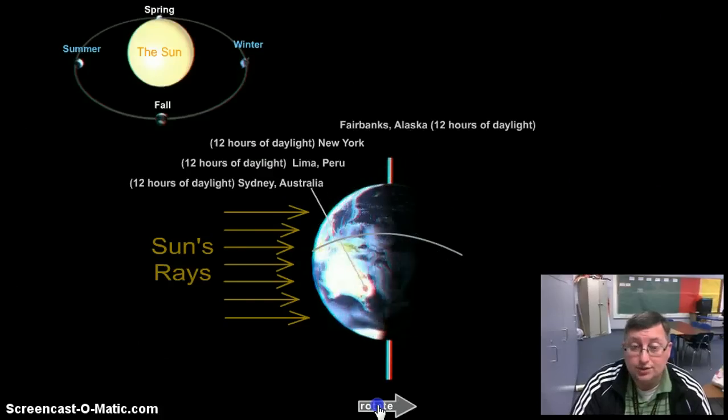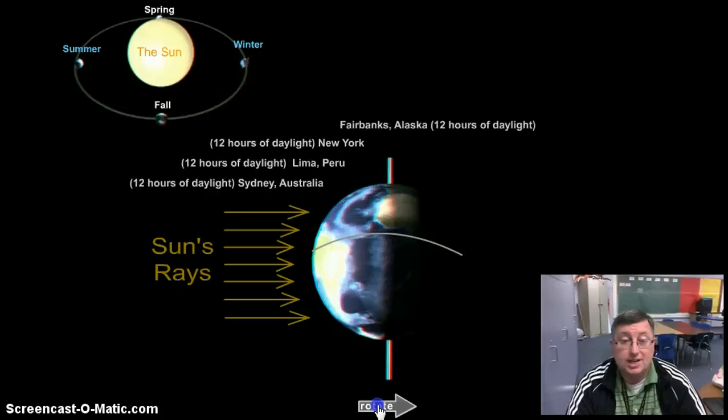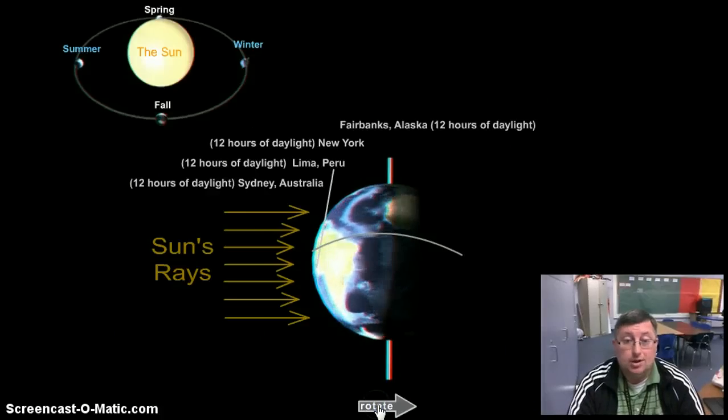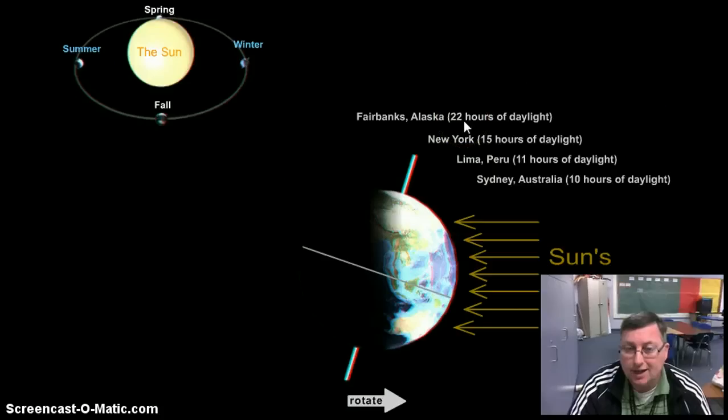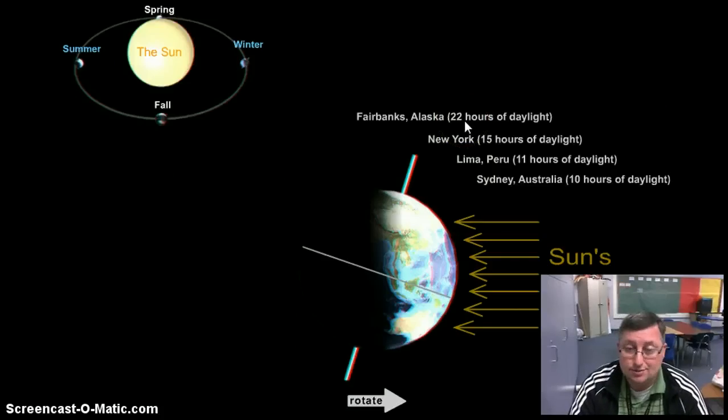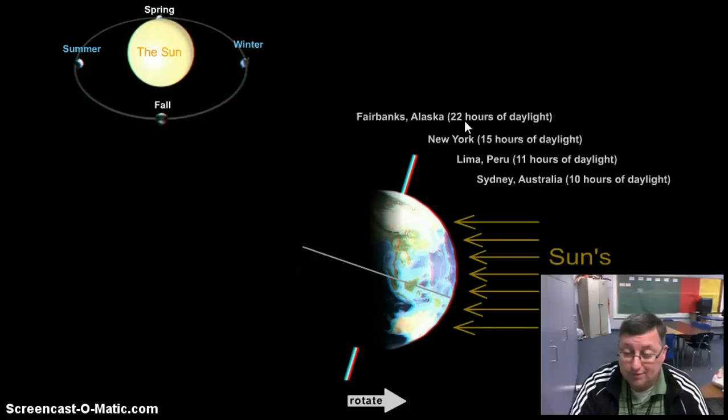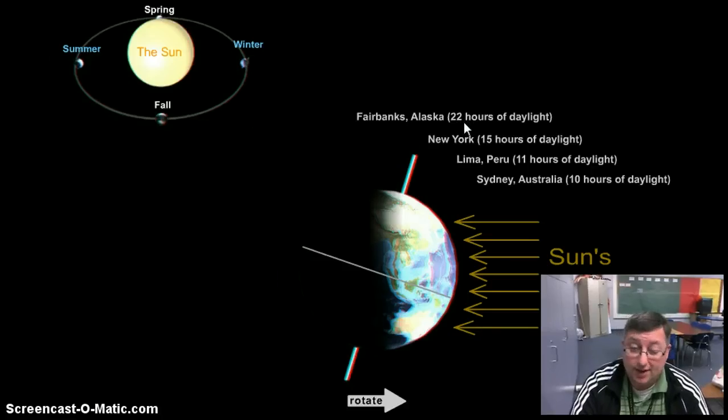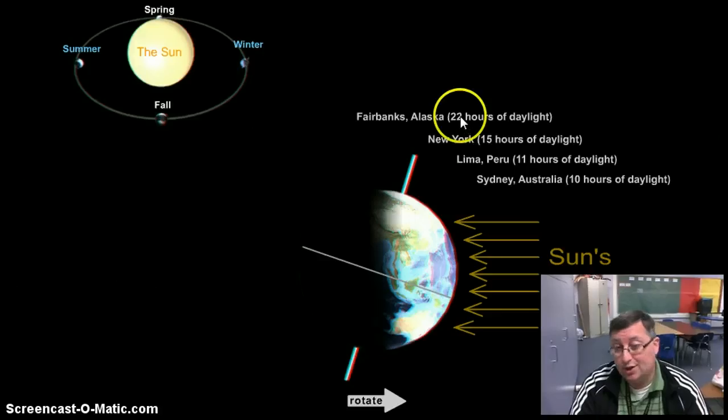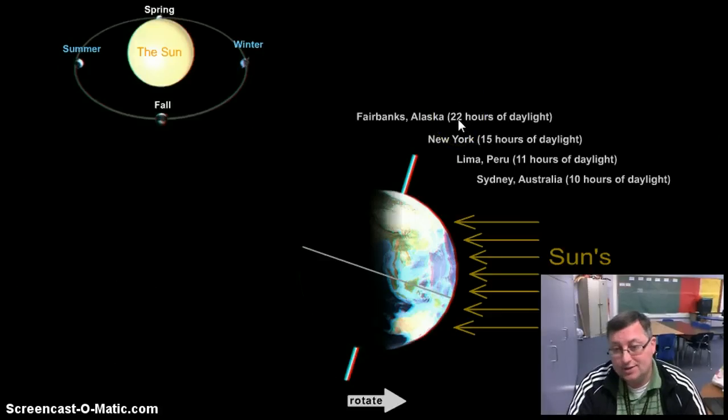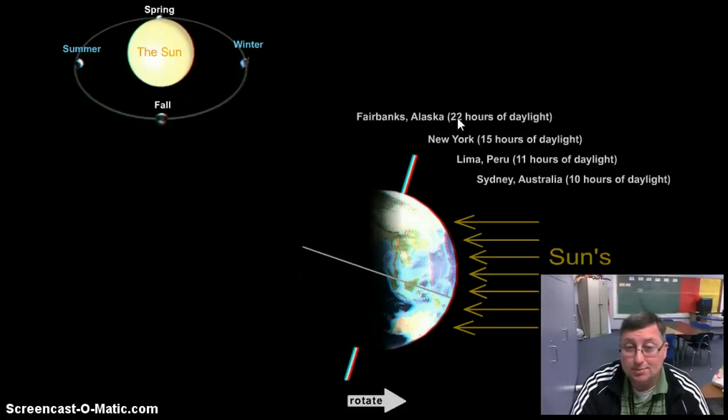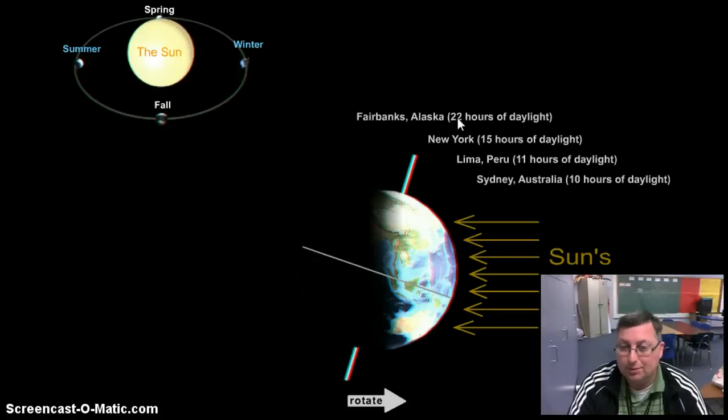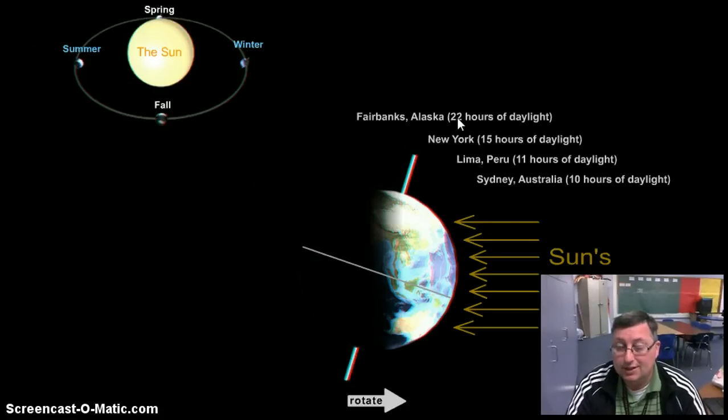Now if we go to summer, notice Fairbanks, Alaska, 22 hours of daylight. That's almost every hour of the day. You can golf at 10 o'clock at night. There's actually a golf outing that tees off at 10 o'clock at night. And I'm contemplating going up there with some buddies sometime because it would be just unreal to be playing golf at 10:30, 11 o'clock at night.